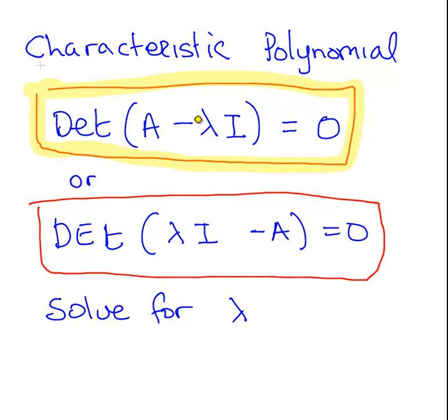Now in some books you get it as A minus lambda I, and in other books you get it as lambda I minus A. You get the determinant of that. It actually doesn't matter, they are both right.